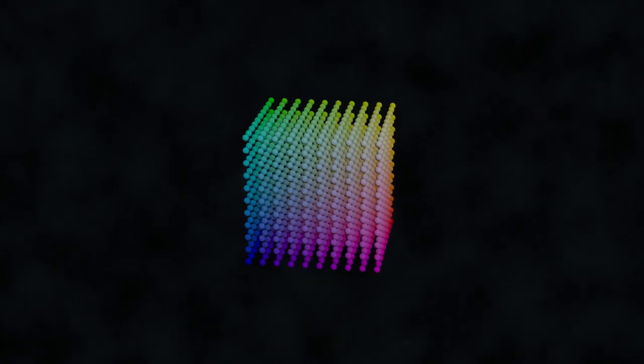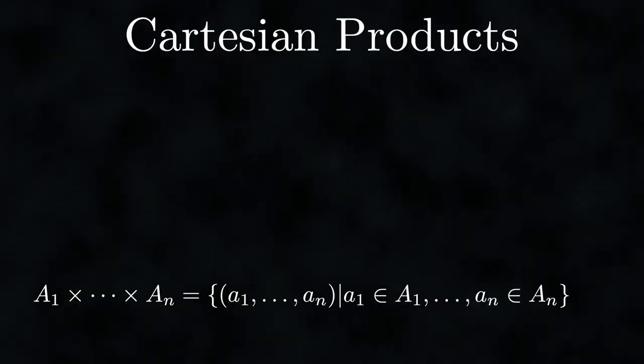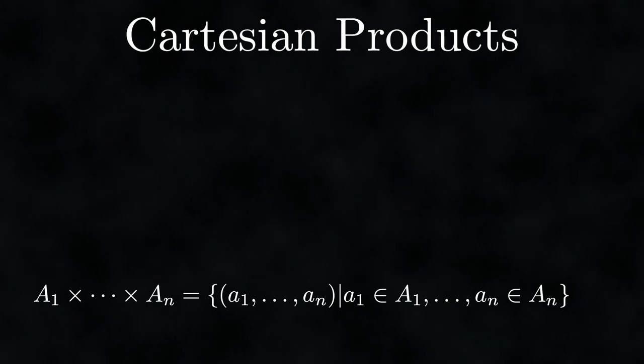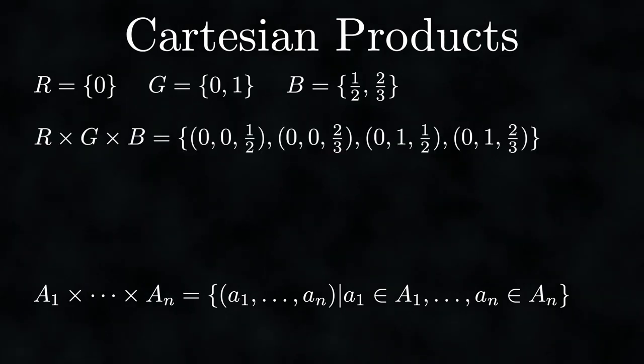Intervals alone are good for building sets of numbers, but we want to create sets of tuples — for example a set of all colors. This leads us to Cartesian products. A Cartesian product is a powerful tool that lets us create sets of tuples. The idea is to combine multiple sets to form a set of tuples containing their elements. Taking three sets R, G, and B, the Cartesian product R × G × B results in a set containing tuples whose first element is from R, second from G, and third from B.